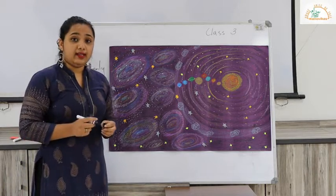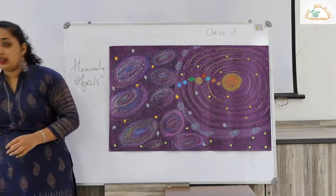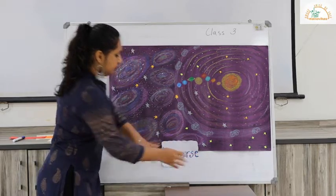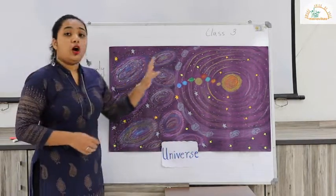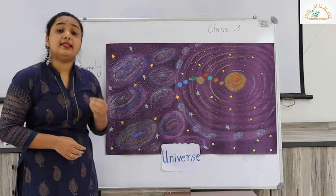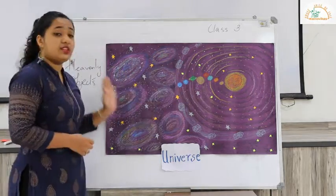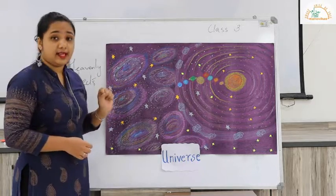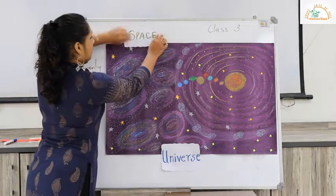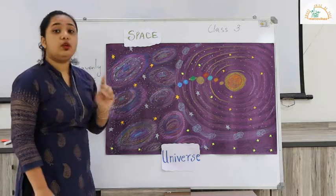Now where are these objects located? They all are located in what we call the universe. All these objects — the comets, asteroids, planets, the sun and the stars — are located in a vast expanse of darkness that is called space. In other words, the darkness around the stars and the planets is called space.